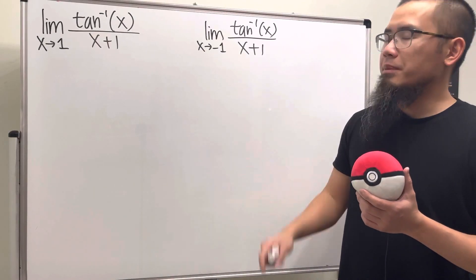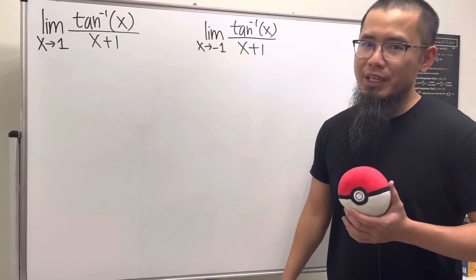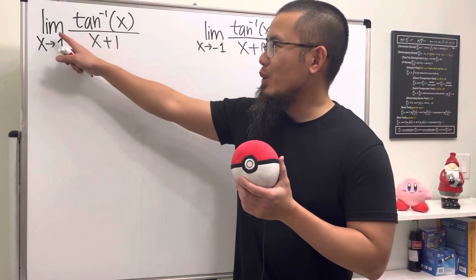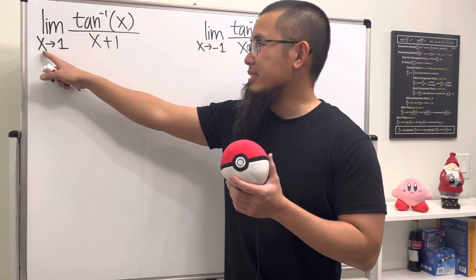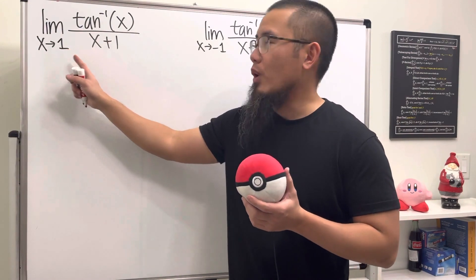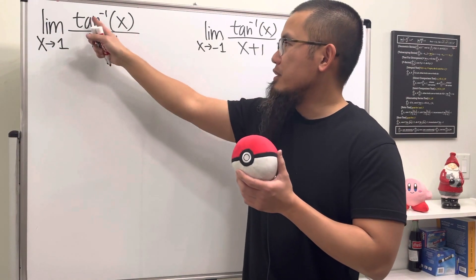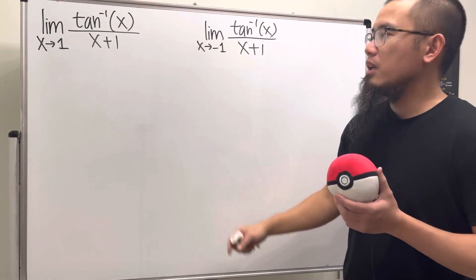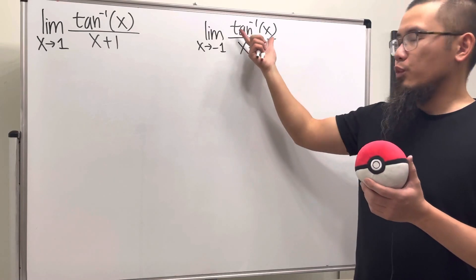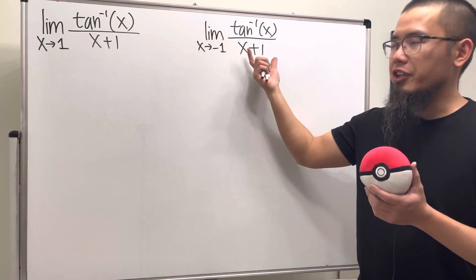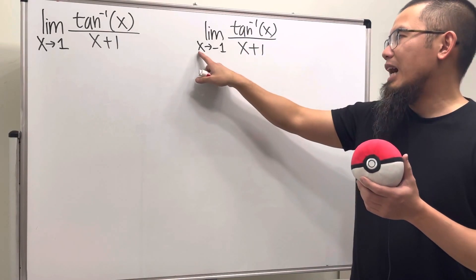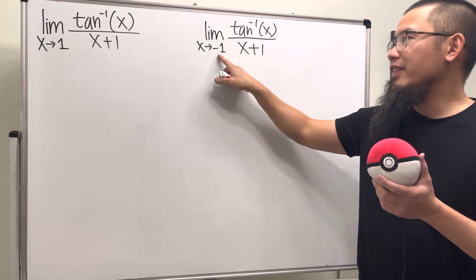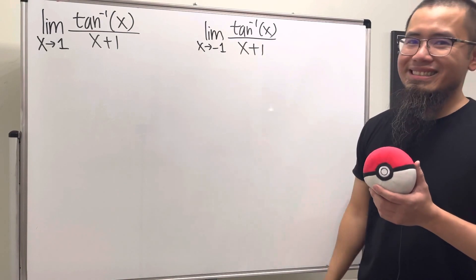How do we compute these two limits without a calculator? The first one is the limit as x approaching positive one of inverse tangent of x over x plus one. The second one has the same function but with the limit as x approaching negative one.